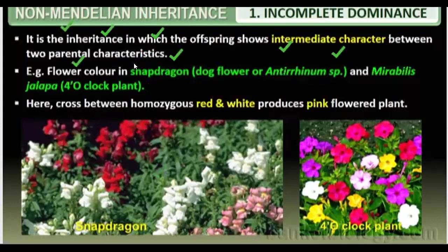Flower color in snapdragon and Mirabilis jalapa shows incomplete dominance. This is the snapdragon flower, and this is the Mirabilis jalapa flower, also known as the four o'clock flower. You can see that the flower color has three characteristics: the red flower, the white flower, and the pink flower.